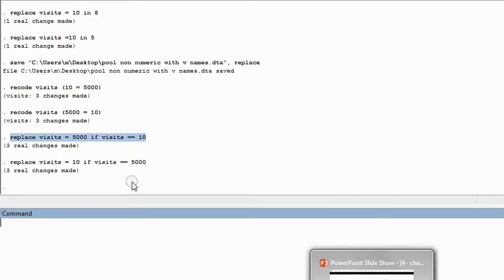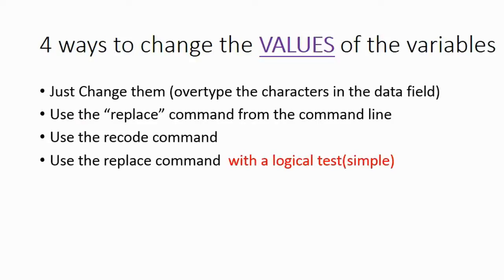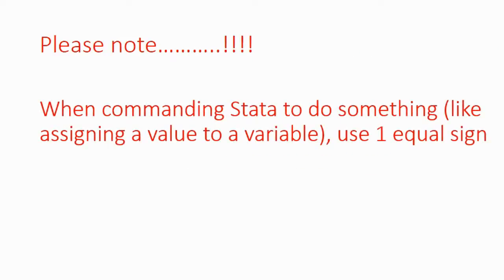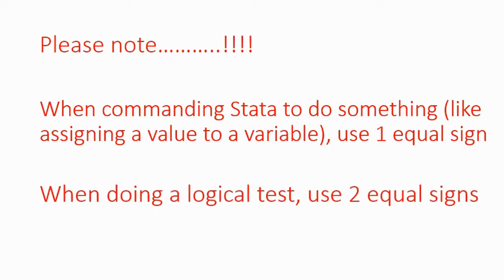You may ask: why one equal sign on one side but two equal signs on the other? This brings us to a general rule in Stata. When commanding Stata to do something like assigning a value to a variable, we use only one equal sign. However, when doing a logical test to check if something equals something else, that's when we use two equal signs. This is a recurring theme that will be explained more deeply in future videos.